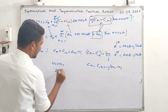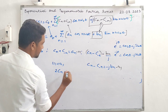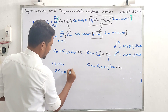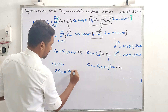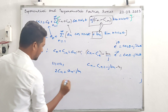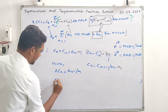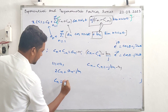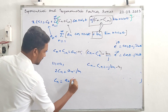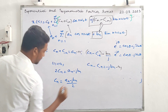Adding equations 1 and 2 gives 2 times c_n equals a_n minus j b_n, so c_n equals (a_n minus j b_n) divided by 2. Subtracting equation 2 from equation 1 gives 2 times c of minus-n equals a_n plus j b_n, so c of minus-n equals (a_n plus j b_n) divided by 2.